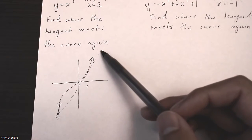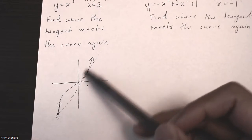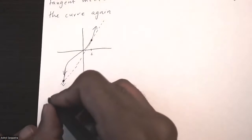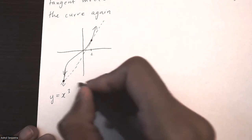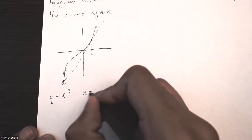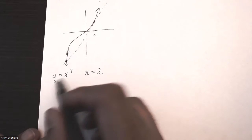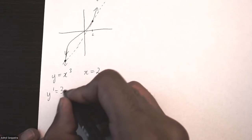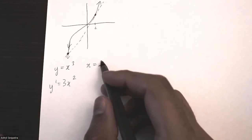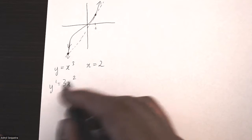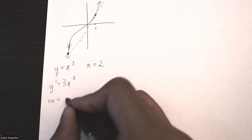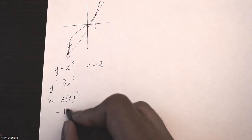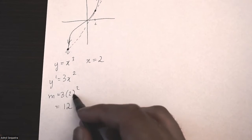The first thing we need to do is find the equation of this tangent line. I have the equation y equals x cubed and the x value is 2. I'll derive this equation, so y prime is 3x squared. Then I'll substitute in the x value to find the slope: 3 times 2 squared is 12.